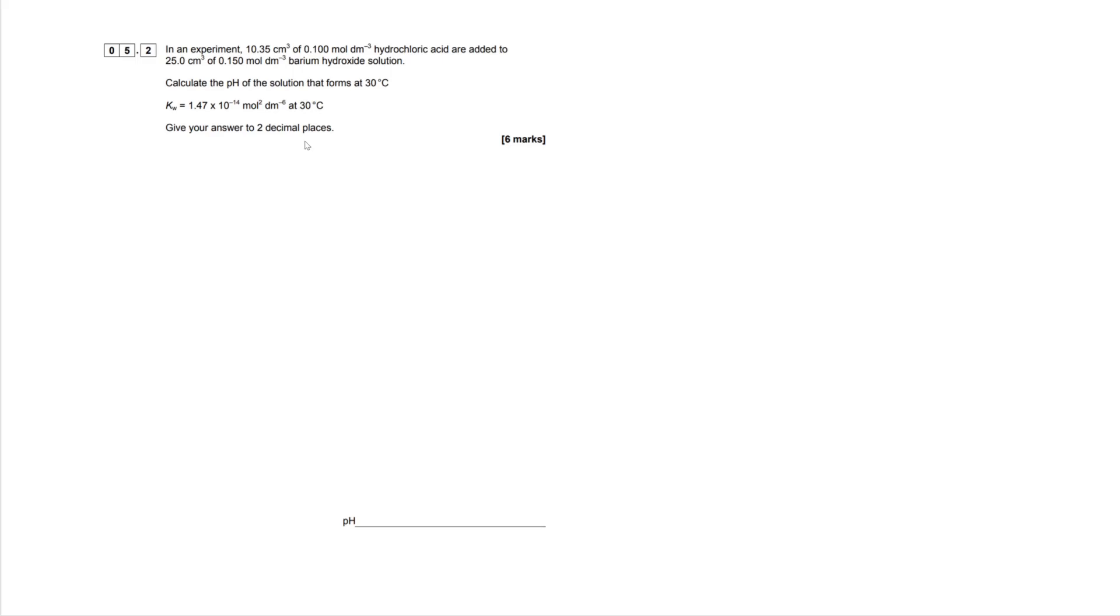So let's jump straight into this question. In an experiment, 10.35 centimeters cubed of 0.1 mol per decimeter cubed hydrochloric acid are added to 25 centimeters cubed of 0.15 mol per decimeter cubed barium hydroxide solution. Calculate the pH of the solution that forms at 30 degrees Celsius. We're given some Kw values here and we have to give our answer to two decimal places.